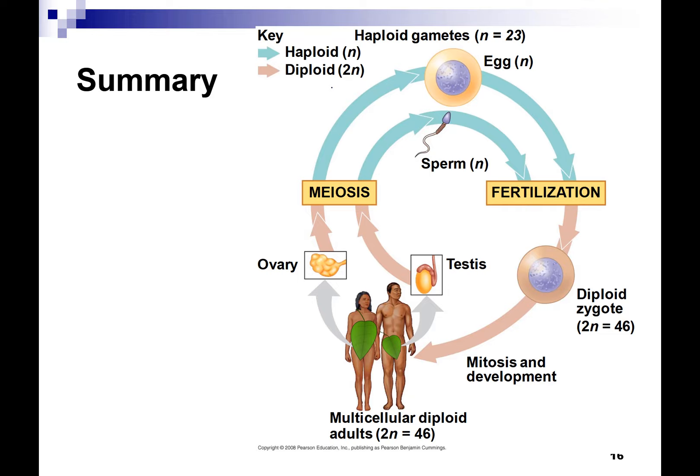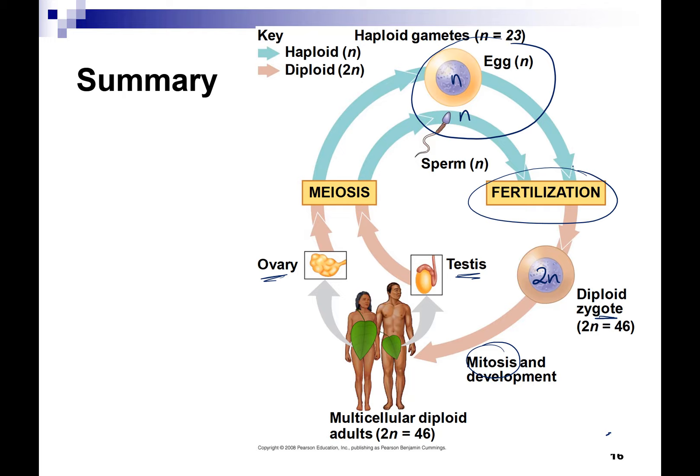What's happening is we produce haploid egg and sperm — N and N — and when they fertilize, you get a 2N zygote. That was you many years ago. You divided by mitosis, mitosis, mitosis, mitosis, and became the person that you are. And in your ovaries or testes, whichever you may have, some cells have undergone meiosis to produce the egg or the sperm.